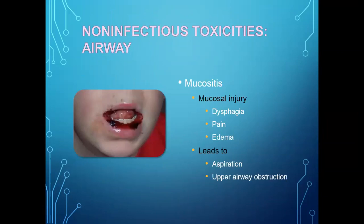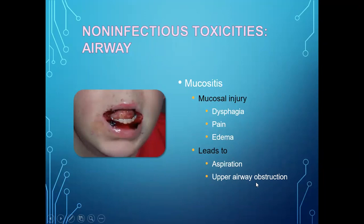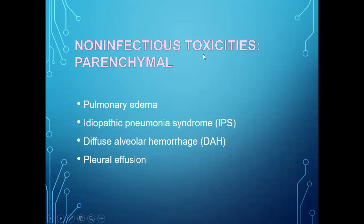Non-infectious airway toxicity: mucositis first injures the mucosal layer, leading to dysphagia (difficulty swallowing). The patient experiences pain on swallowing, sometimes edema, which leads to aspiration and upper airway blockage, because aspirated material can enter the respiratory tract and cause obstruction.